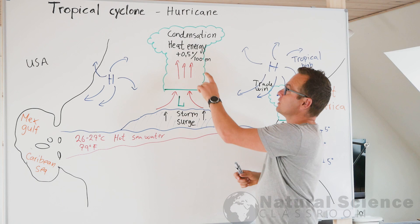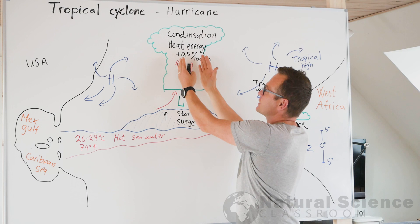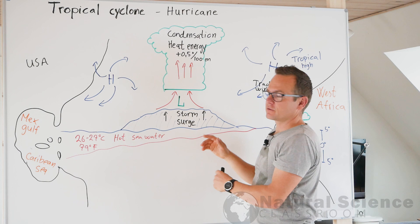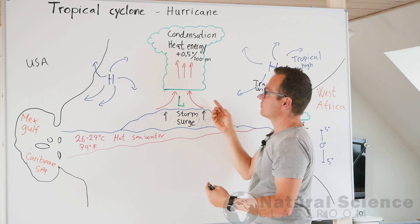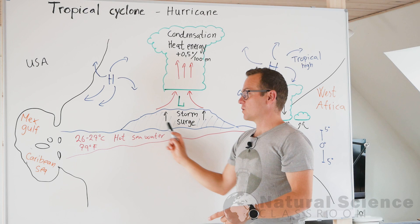It releases energy. It releases 0.5 degrees Celsius every time the air rises 100 meters into the air. It gets warmer, and when it gets warmer, it gets lighter, and then it rises up even faster. When it rises up faster, it will also suck in air faster, and this warm, moist air is then giving new energy to the condensation process. This weather system is accelerating as long as it's over hot seawater.